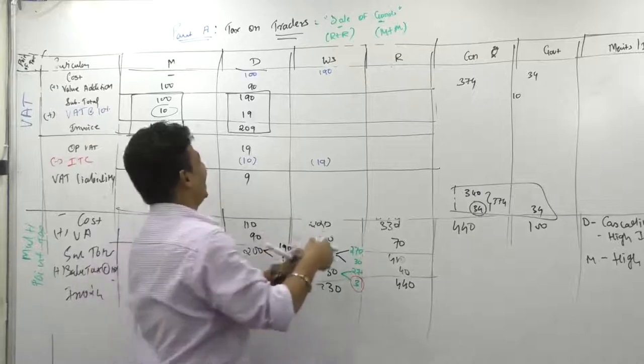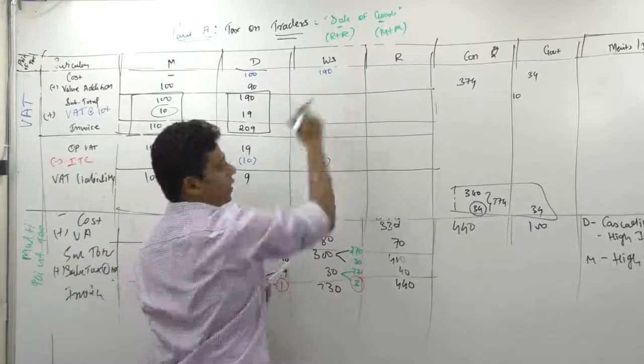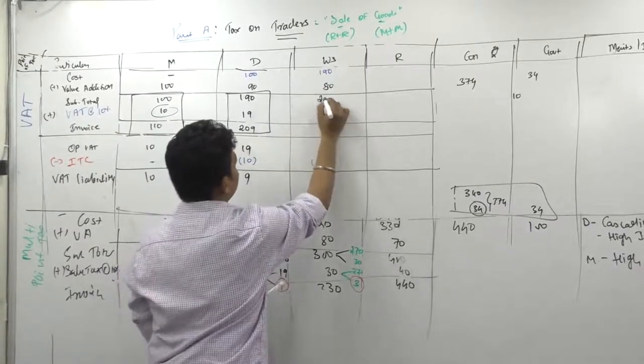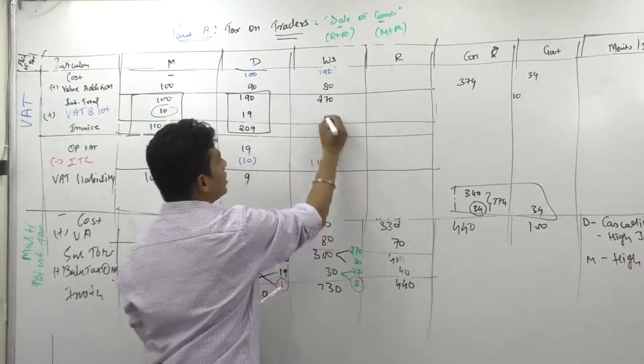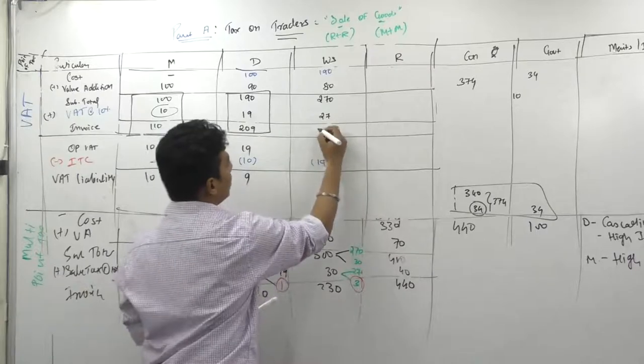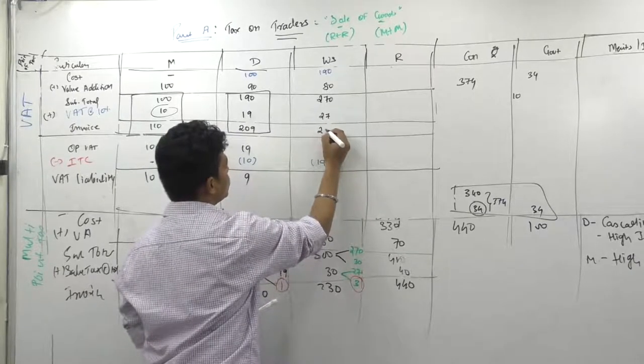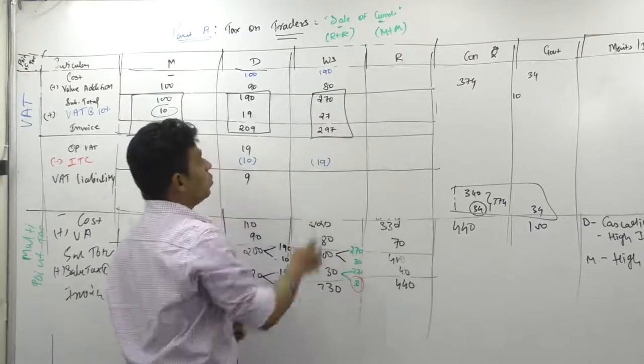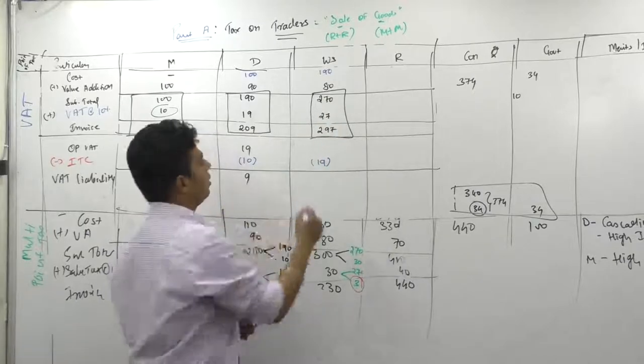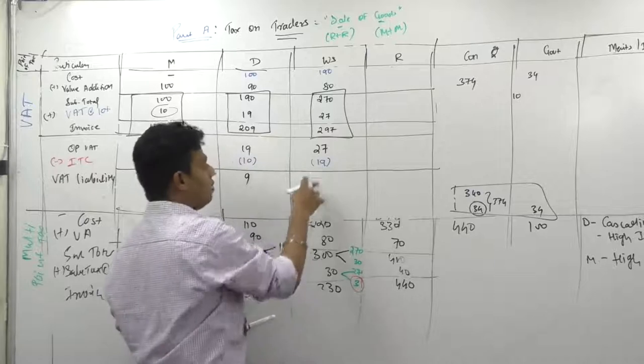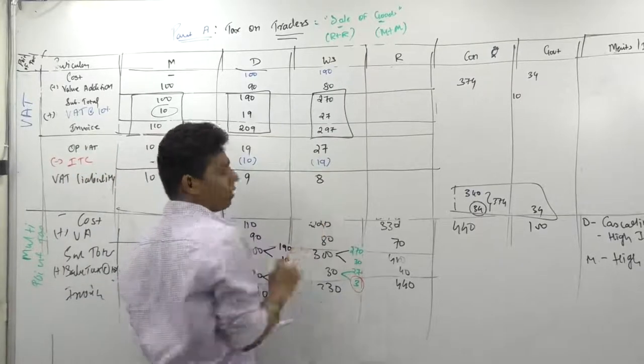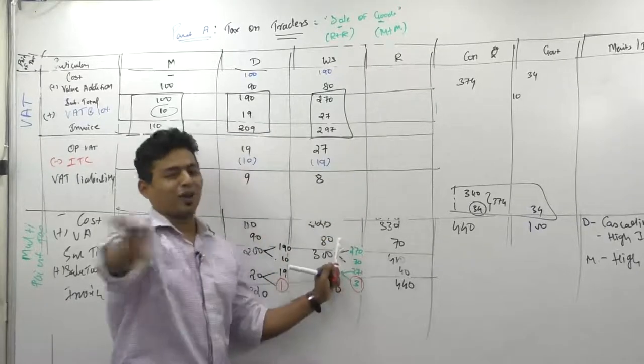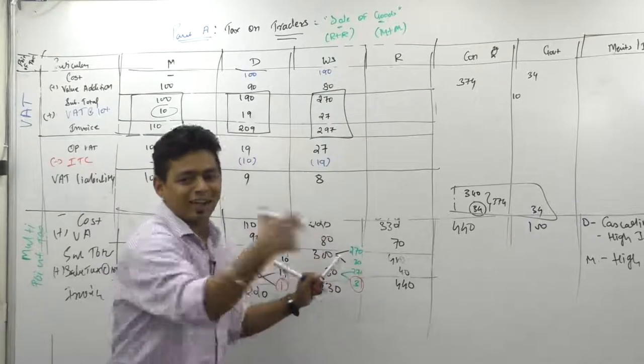One more time. Please give me a question. I want to teach one more time. His value addition 80. He is ready to sell this goods at 270. But he cannot sell because he has to charge 27. So he will sell at 297. This is again invoice. What is his output liability? But will he pay 27? No. He will take a coupon, 19. And he will pay 8. Understood? 50% but understood. 50% still not understand. Again, one more time. Please.